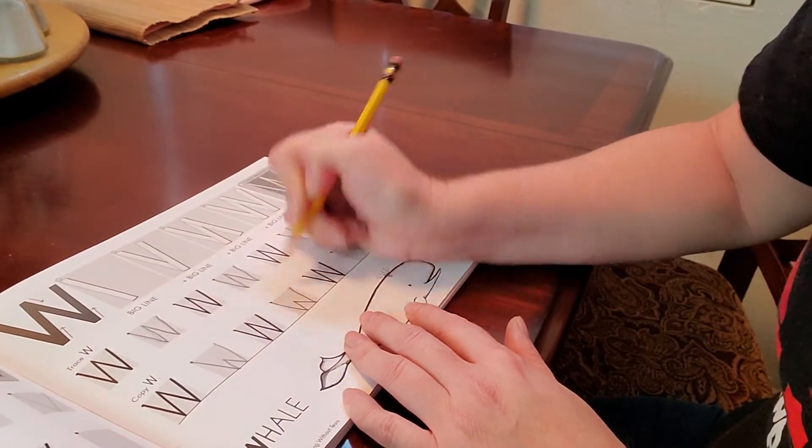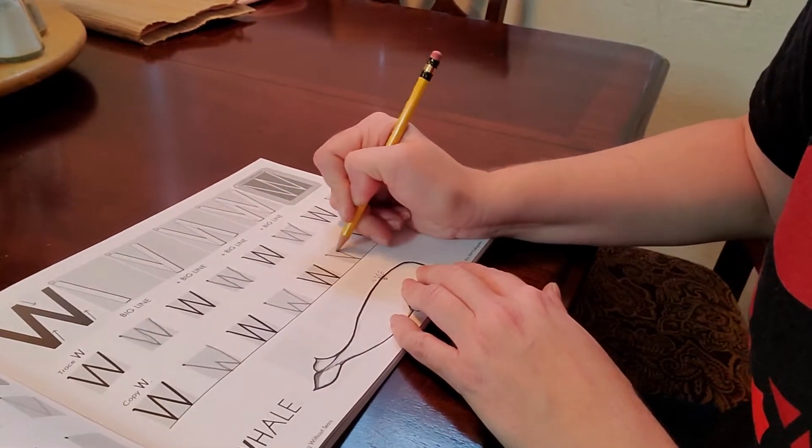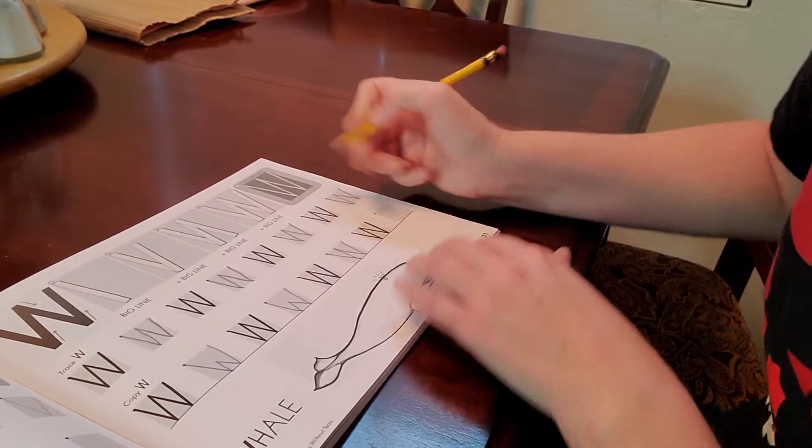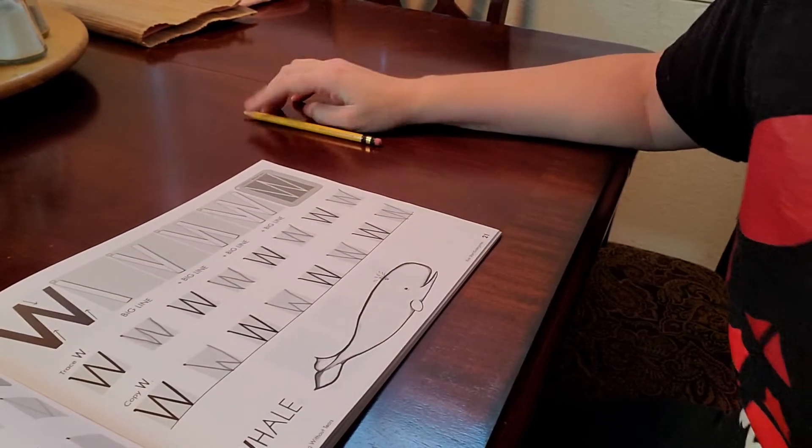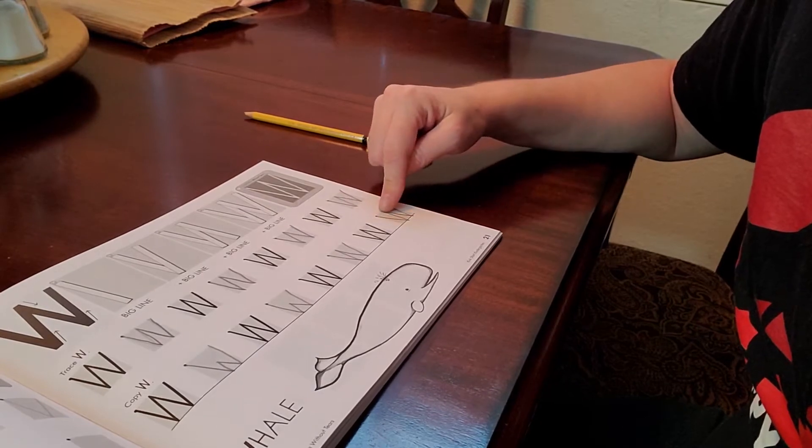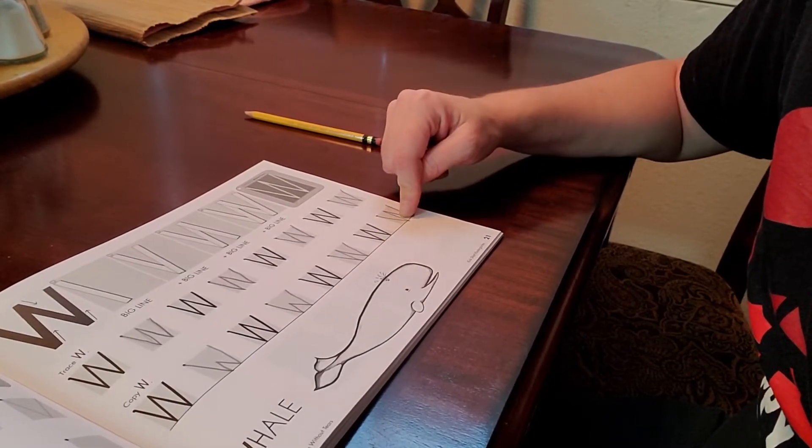These ones put the middle diagonal all the way up as well, so you can do it either way like I said earlier in the week. Our uppercase Ws are done.